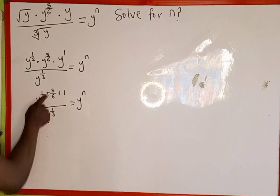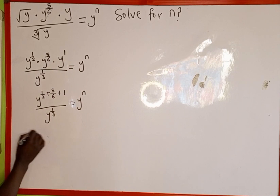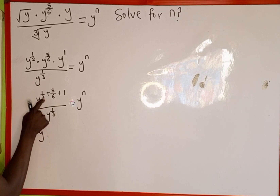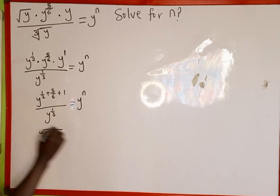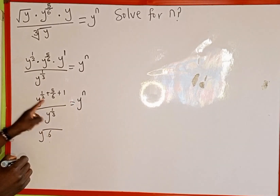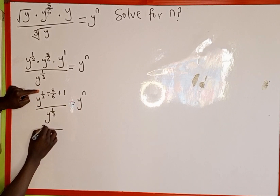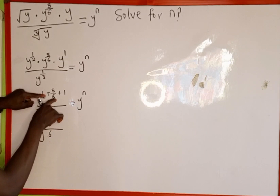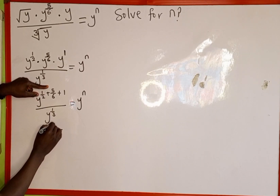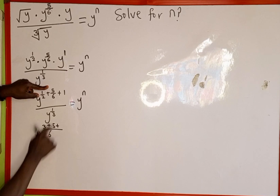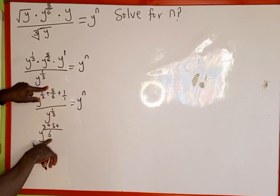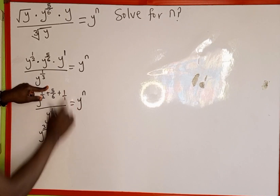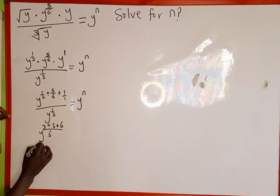The next thing is to simplify this power. The LCM of 2 and 6 is 6, then we draw a division line. 6 divided by 2 is 3, then 3 multiplied by 1 is 3; plus 6 divided by 6 is 1, and 1 multiplied by 5 is 5; then plus 6 divided by 6 multiplied by 1 is 6. This is over 6.